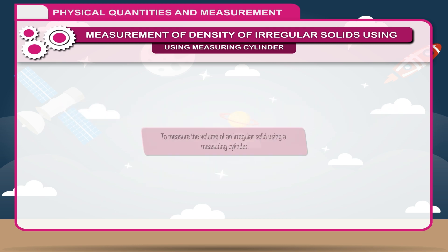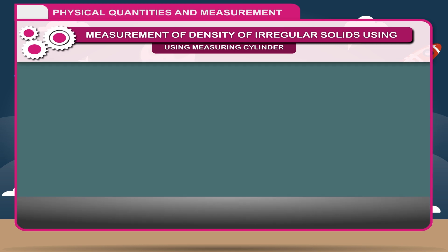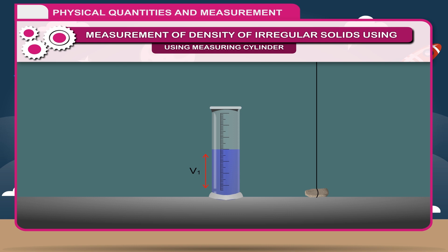Activity: To measure the volume of an irregular solid using a measuring cylinder. Take an irregular solid that does not dissolve in water but sinks in it. Clean a measuring cylinder and pour some water into it so that the liquid can completely immerse the solid. Note the reading of the level of water in the measuring cylinder. Let it be V1. Now, tie a thread around the irregular shaped solid and immerse it completely in the cylinder.